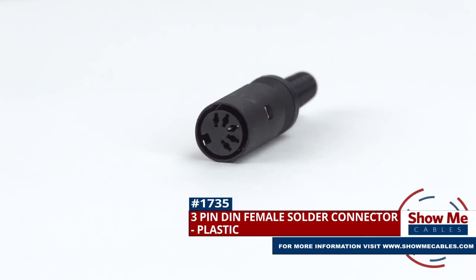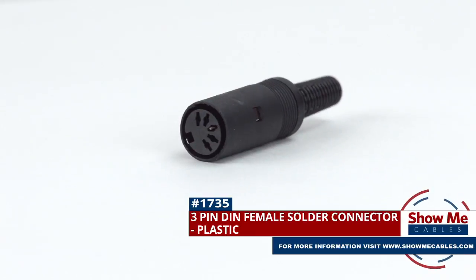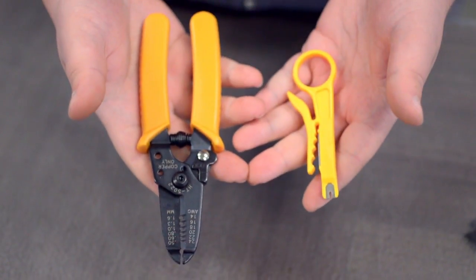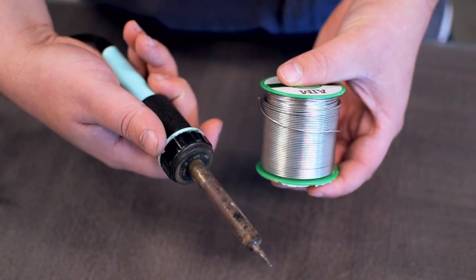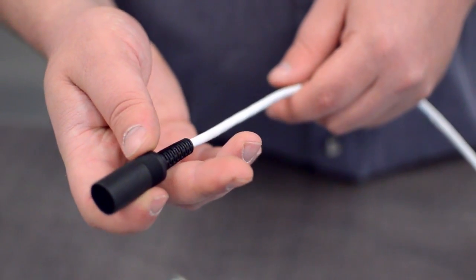This is the 3-pin DIN female solder connector. To install, you will need the following items: low voltage cable, wire strippers, solder and soldering iron, and the DIN connector. Start by inserting the plastic boot over the jacket.